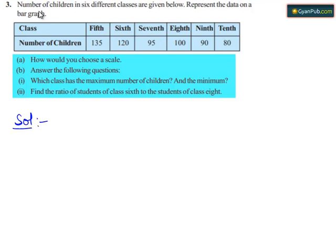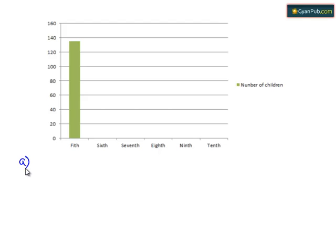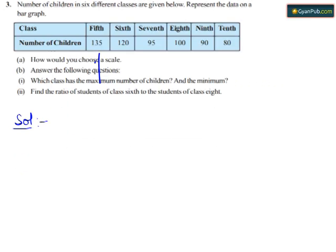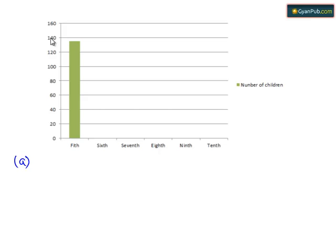Given the number of classes and number of children, let's start the solution with part A. Construct the bar graph by taking classes on the x-axis and the number of children on the y-axis. Start the scale at 0. The greatest value in the table is 135, so end the scale at a value greater than 135 — that is, 160. Use equal divisions with an increment of 20. So the scale is 1 unit equals 20 children.